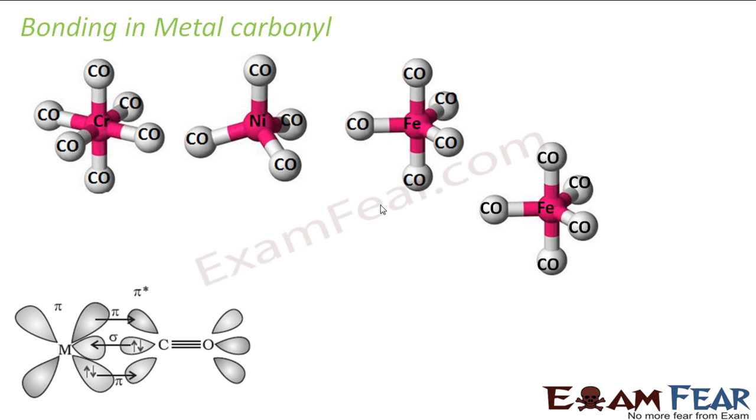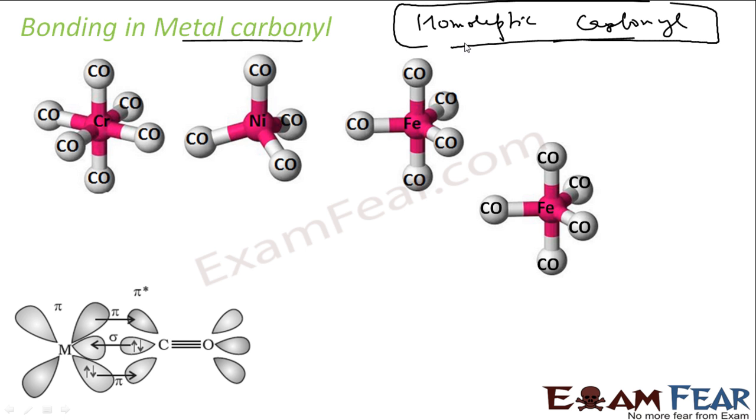So let's see this bonding in metal carbonyl. And why we are studying this special case is because most of the transition metals form the homoleptic carbonyl. That means only carbonyl is there. For example, in this case chromium has 6 carbonyl groups, nickel has 4. So they form homoleptic carbonyl. This is seen that many transition metals form this. Since you have a lot of carbonyl metal bonding, we are studying this in a separate section altogether.